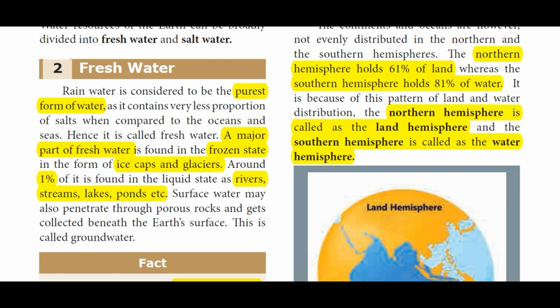Of the 3% fresh water, most is in ice caps and glaciers — around 2% is frozen. Around 1% is liquid, found in rivers, lakes, and ponds. Rivers, streams, ponds, and lakes together make up less than 1%. You will also know the groundwater.